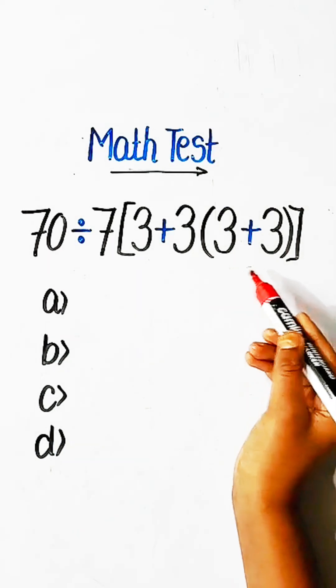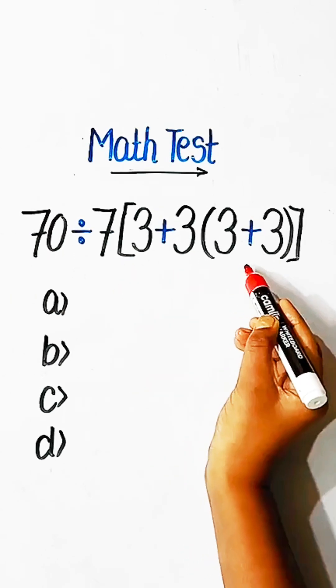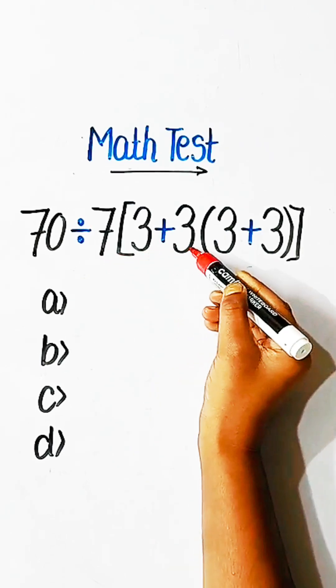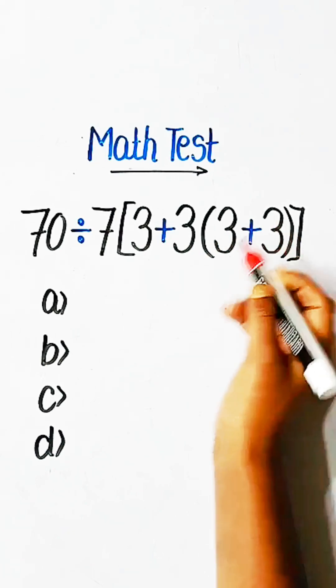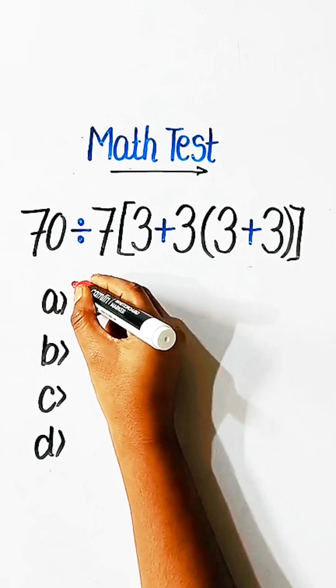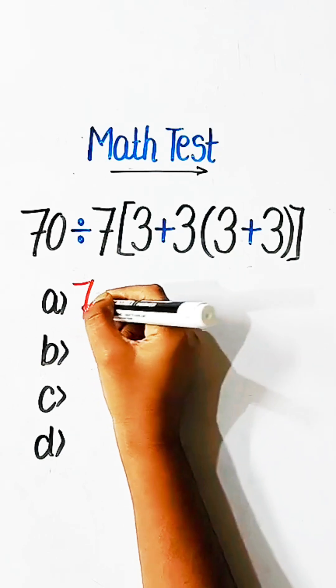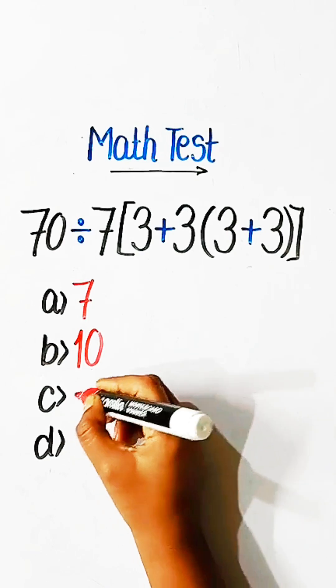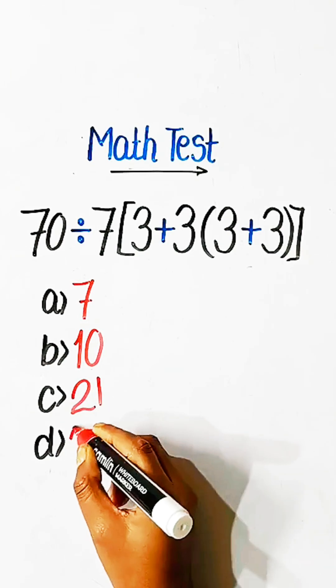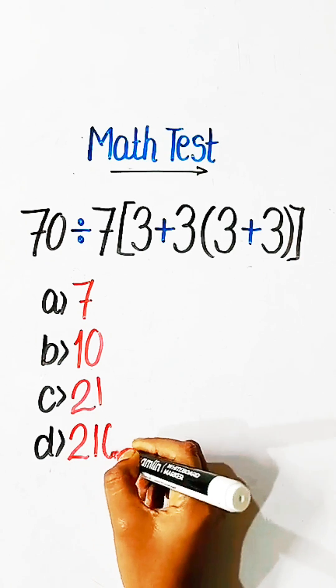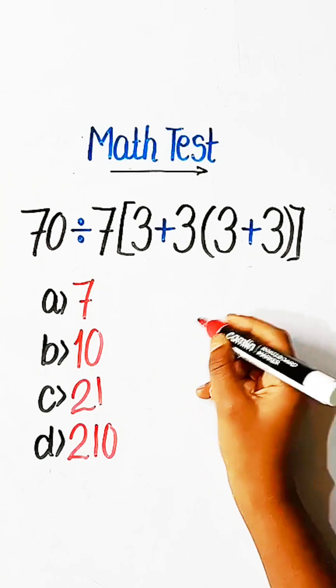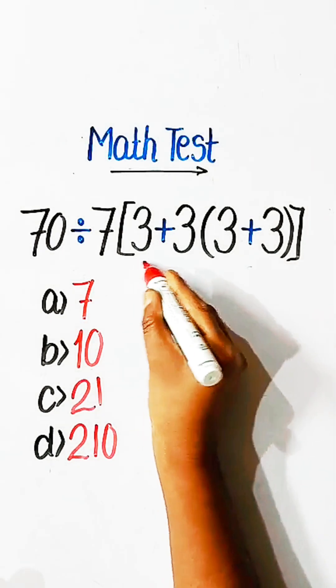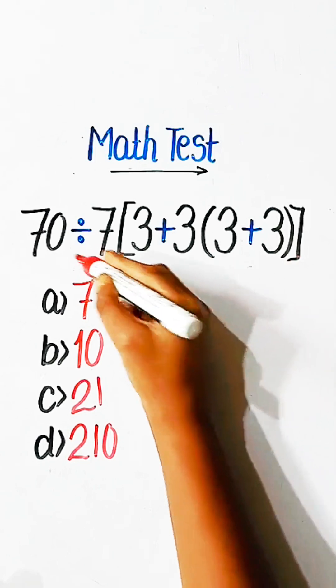Hello everyone, in this video we will try to solve this math expression: 70 divided by 7 multiplied by 3 plus 3 under bracket 3 plus 3 equals to what? Option a: 7, option b: 10, option c: 21, option d: 210. Comment your answer.